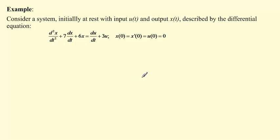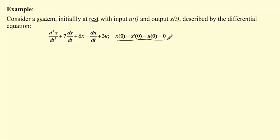We have the following example. We consider a system initially at rest, which precisely states that the initial conditions are all equal to zero, where u(t) is the input and x(t) is the output. The system in this case is described by the following differential equation.